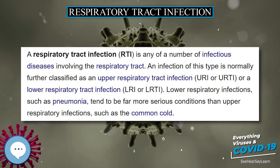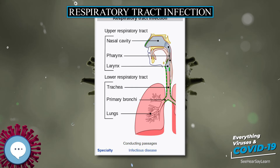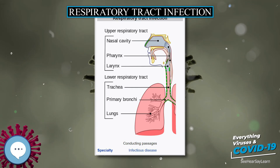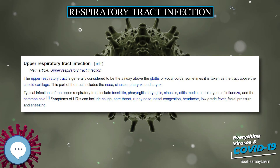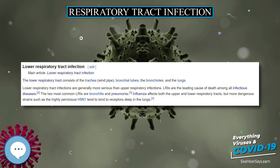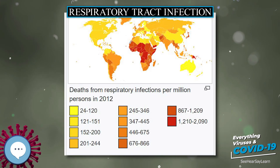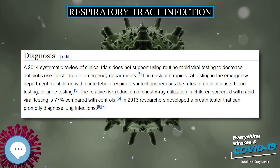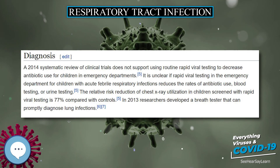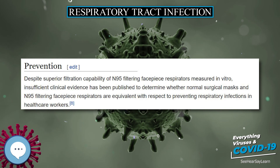Prevention. Despite superior filtration capability of N95 filtering face-piece respirators measured in vitro, insufficient clinical evidence has been published to determine whether normal surgical masks and N95 filtering face-piece respirators are equivalent with respect to preventing respiratory infections in healthcare workers. Adults in intensive care units, ICU, have a higher risk of acquiring an RTI. A combination of topical and systematic antibiotics taken prophylactically can prevent infection and improve overall mortality for adults in ICU.